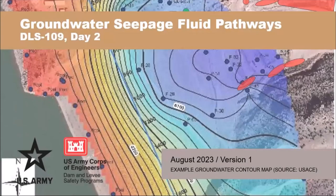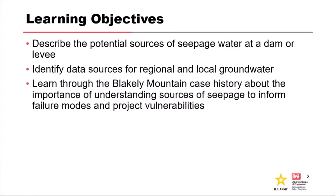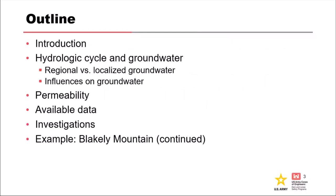I'm going to segue into a brief discussion about groundwater seepage and fluid pathways. This is a close-in zoom of a groundwater contour map we made for the project, with overlaid active seeps at the dam — the dam of my nightmares. Learning objectives: we're going to look at potential sources of seepage and water at a dam or levee, talk about identifying data sources for regional and local groundwater information, and pick up our Blakely Mountain case history.